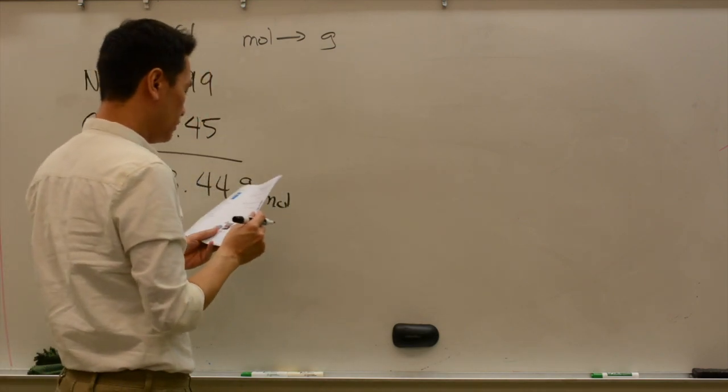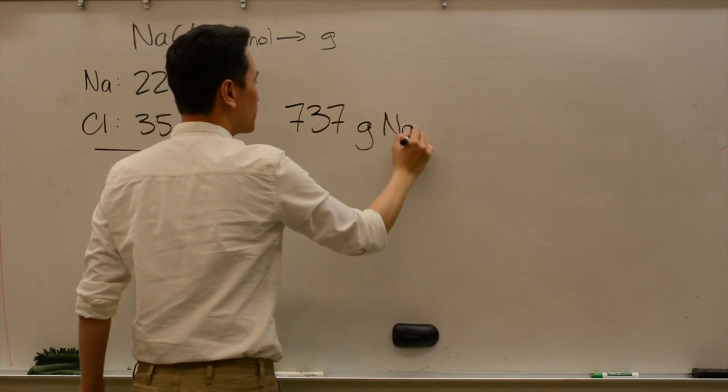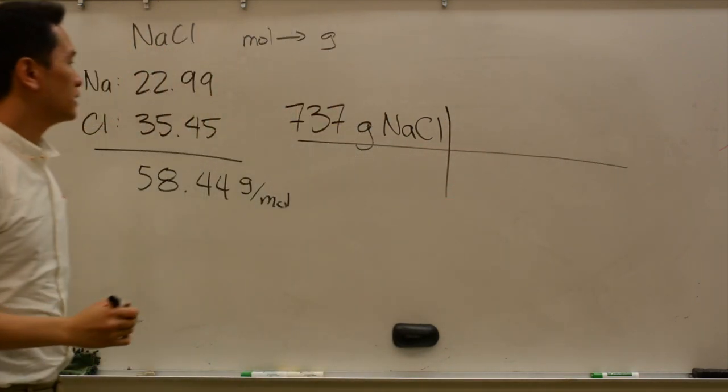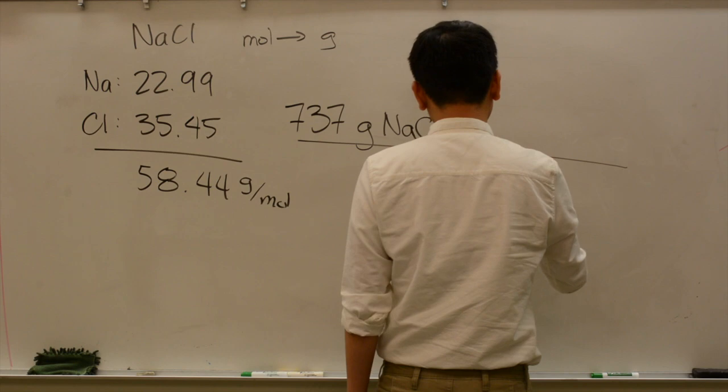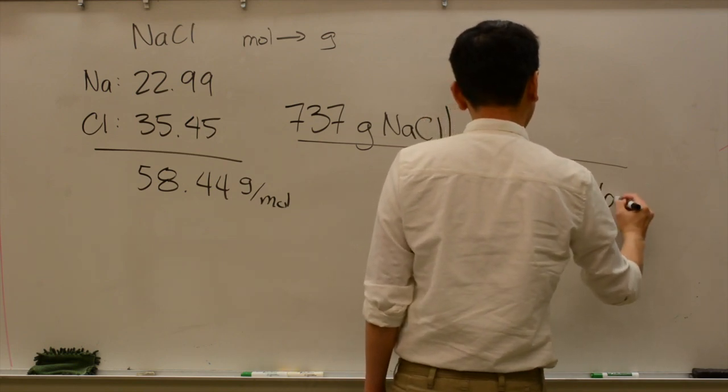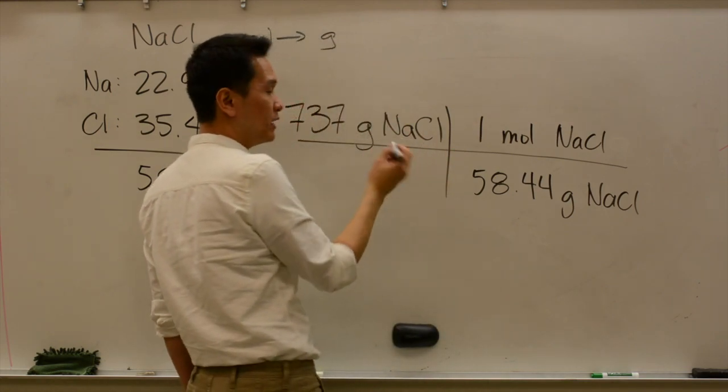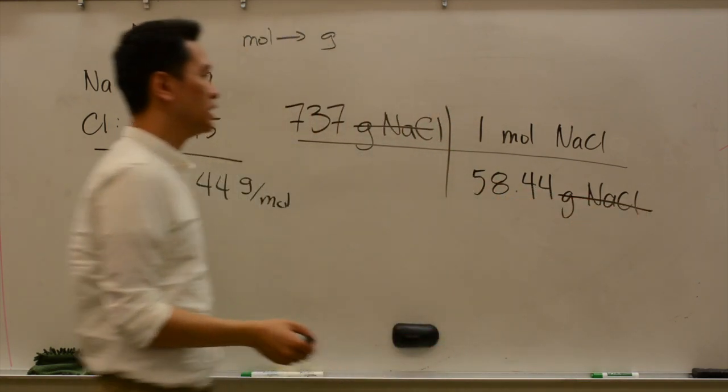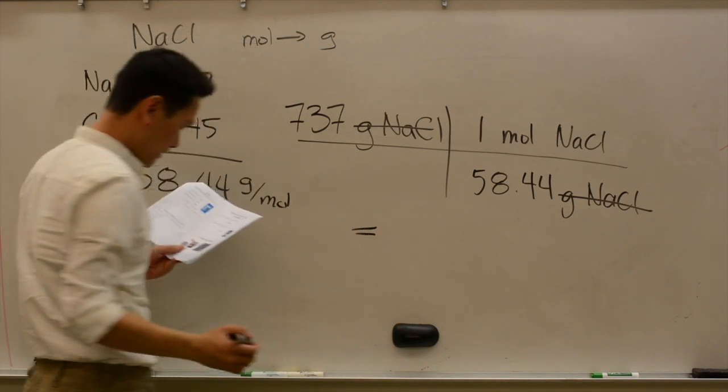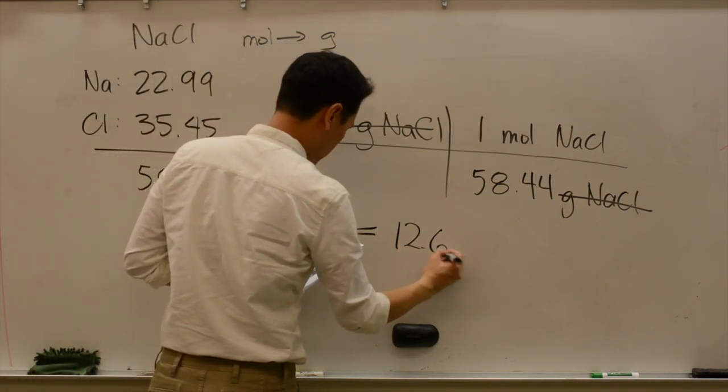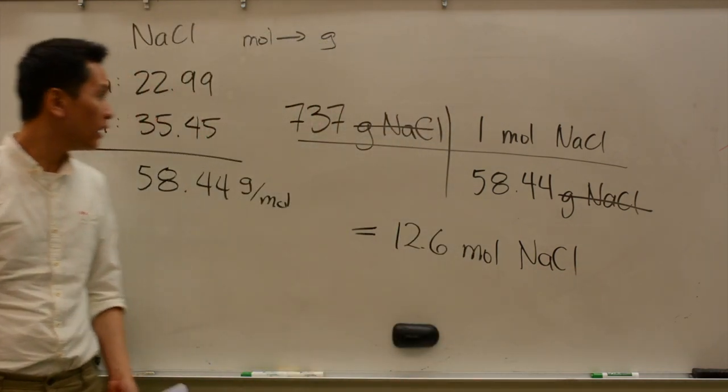So we go to the problem. It reads that you have 737 grams of sodium chloride. So I need to cancel out the grams, so I'm going to put 58.44 grams of sodium chloride over 1 mole of sodium chloride. Unit analysis says grams and grams cancel out, so we are good to go. So that's 737 times 1 divided by 58.44, and in my calculation, I got 12.6 moles of sodium chloride. Make sure you also get that.